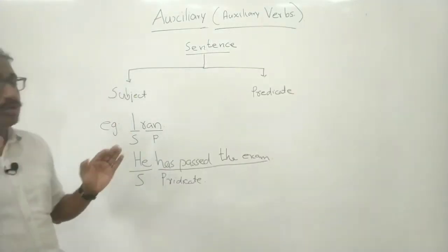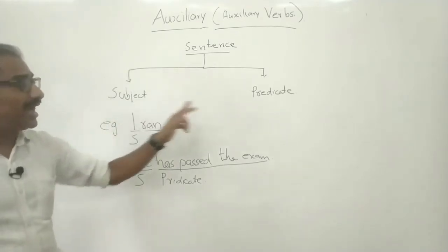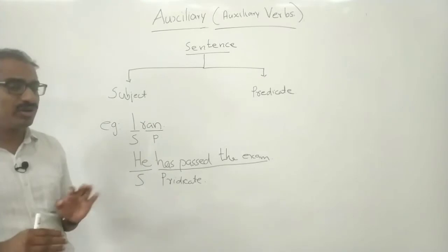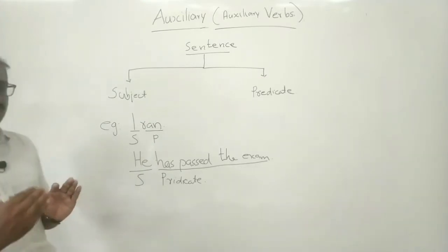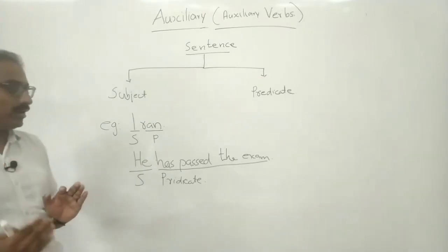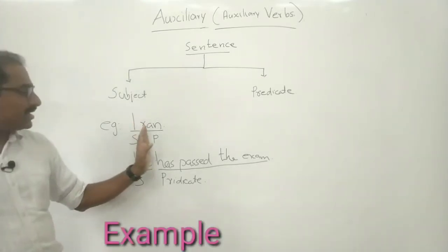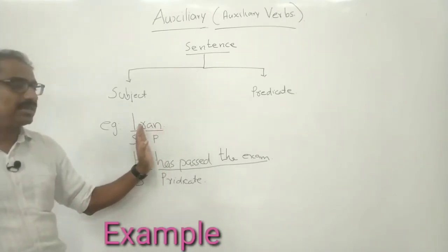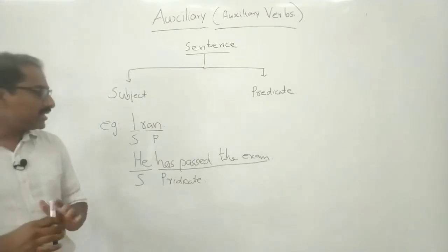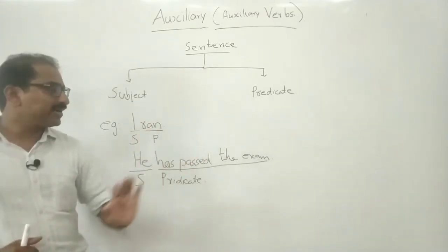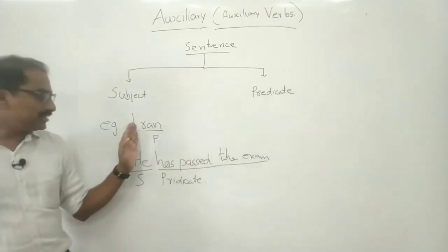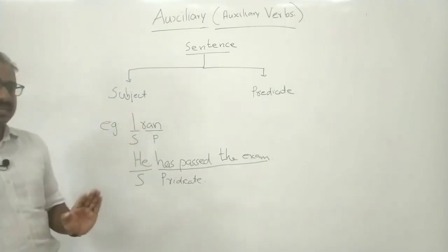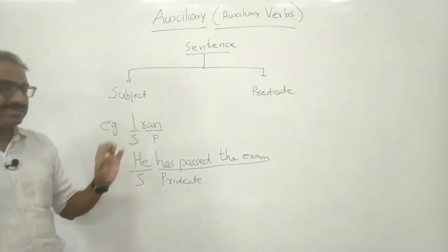A sentence has two parts: the subject and the predicate. Subject we have also discussed in the last video. I here is the subject. Run is the predicate. The verb in a sentence will be part of the predicate, and the subject is the subject itself. The subject stands alone in the sentence.